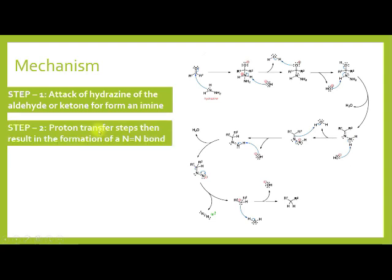The second main step of the mechanism is a proton transfer step resulting in the formation of N=N. Let us see how N=N formation takes place. The hydroxide anion again abstracts a proton, and the electrons shift onto nitrogen, generating a negative charge on nitrogen. Then the pi electrons abstract a proton from a water molecule, and OH⁻ is released.